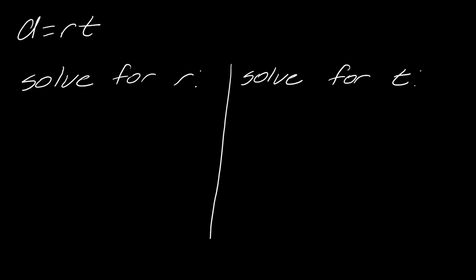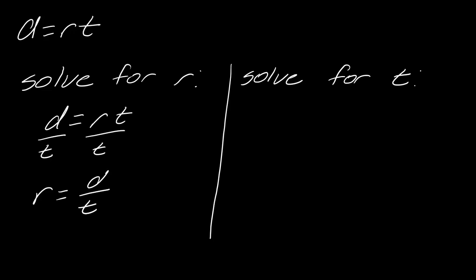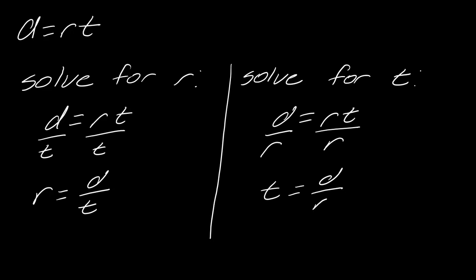Something to notice is that you can rearrange the distance formula. So if I wanted to solve for R, I would just divide by T and get R equals D over T. And if I wanted to solve for T, I would divide by R and get T equals D over R. So we can view the distance formula in a couple of different ways.